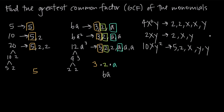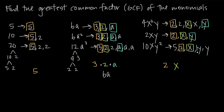Now we've got our prime factors and we look for common factors. We can pull out a 2 from each of these, so we'll pull out the 2. We can't pull out a 5 because 5 is unique to 10xy squared — it doesn't exist as a factor in either of the other two monomials. We can't pull out the additional 2, but we can pull out an x from all three. And we can pull out a y from all three. We know we can't take anything else because from 2xy, we've taken every factor — there are no more factors to take.